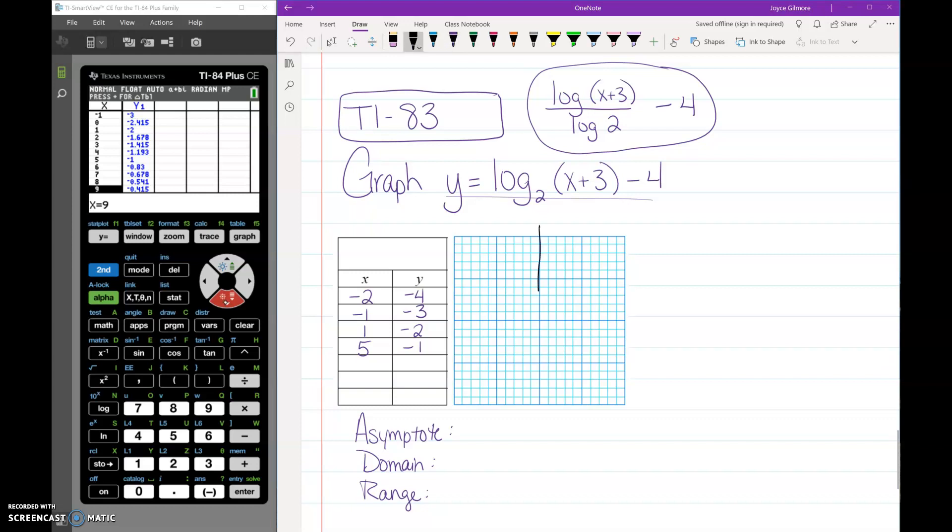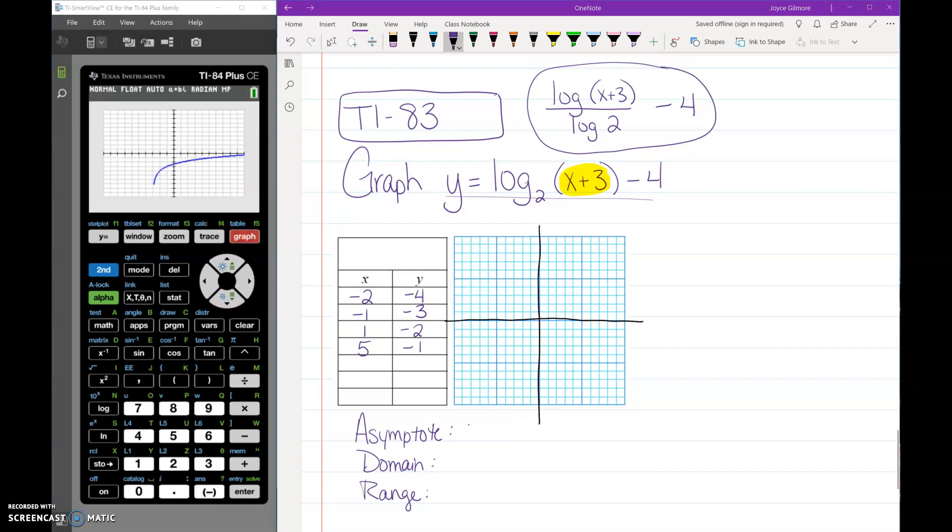Okay, my y-axis is here in the middle. My x-axis is here in the middle. The stuff in the parentheses still tells you what the asymptote is. That tells you that this graph shifted left 3, and you can see that on your graph as well. So our asymptote is x equals negative 3.